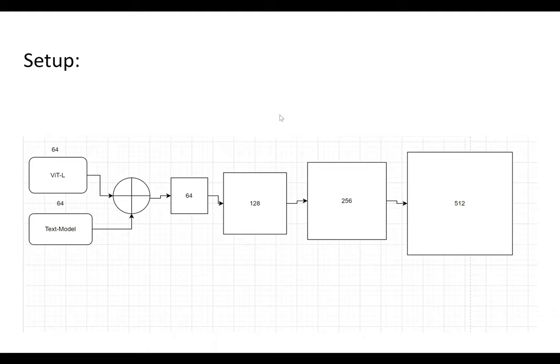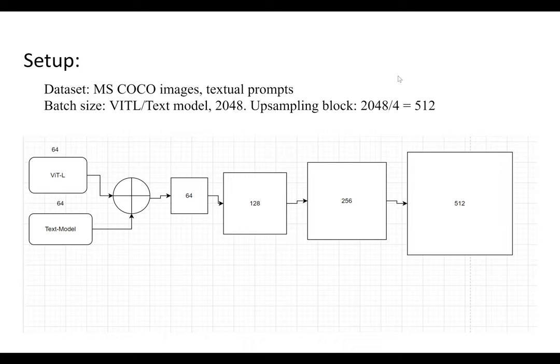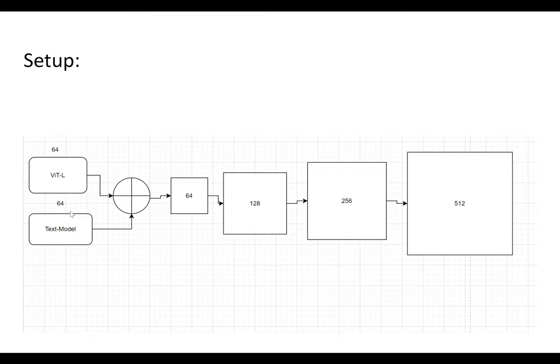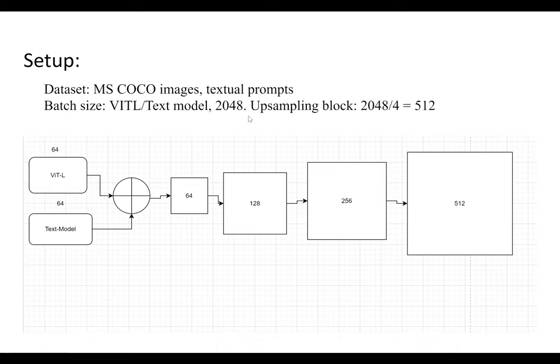The experimental setup uses three different models: the base model and a text model with 64×64 pixel resolution, plus an upsampling network that increases resolution to 512×512. The batch size for the base and text model is 2048, and the upsampling block batch size is 512, calculated as 2048 divided by 4. The dataset used is MS-COCO images with textual prompts from the MS-COCO dataset.